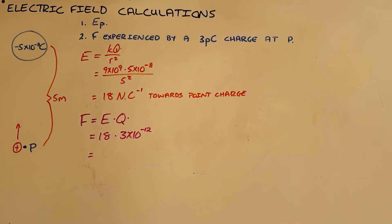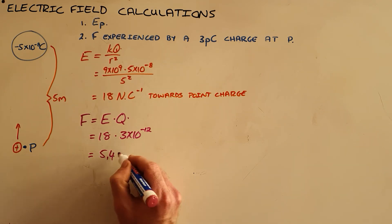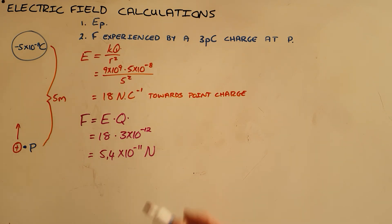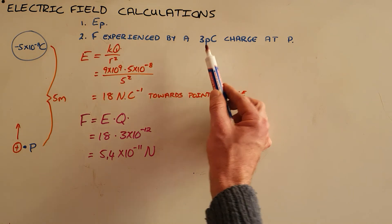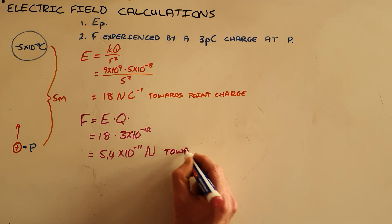And this then tells us that the force experienced is 5.4 times 10 to the negative 11 newtons. And then finally the direction, this is a positive charge, and so this positive charge would be attracted towards that point charge once again.